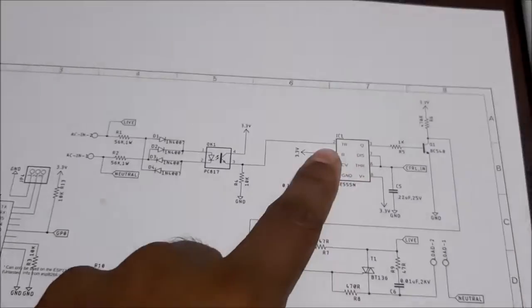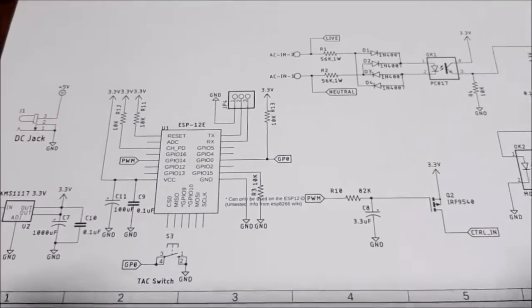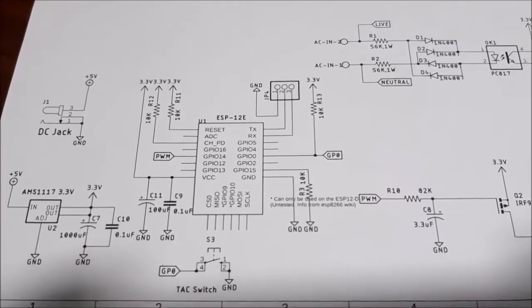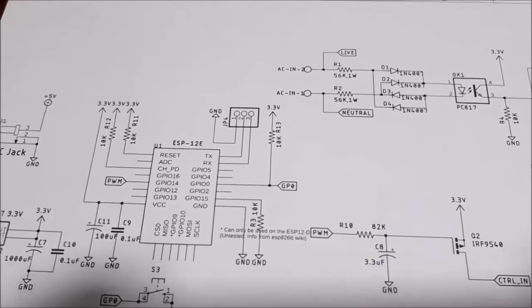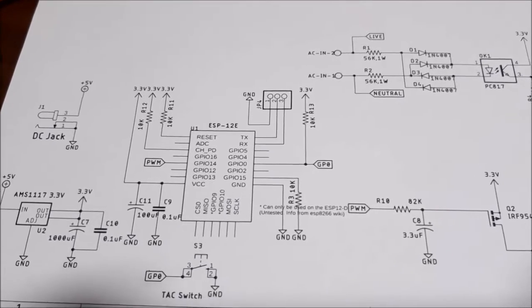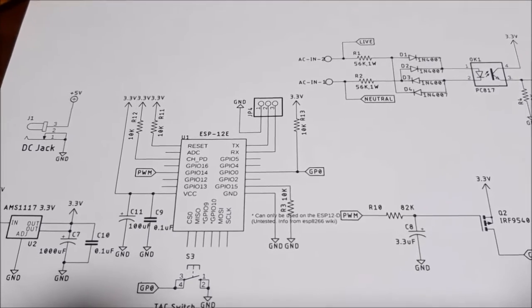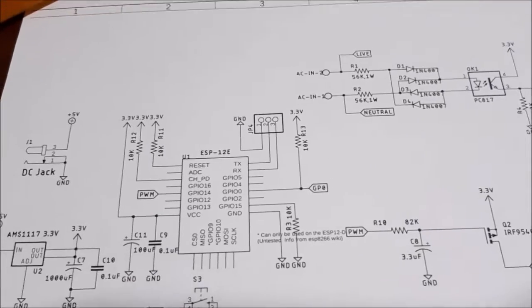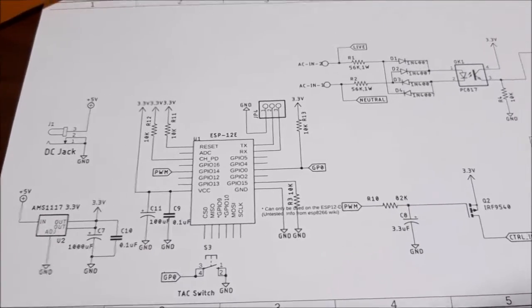This MOSFET drives the 555 timer. Basically the ESP8266 is connected to the internet, pulling the data from Firebase, and when any data change happens in Firebase, that also reflects on the ESP8266 side. That is how the communication is working.